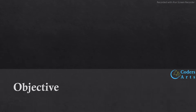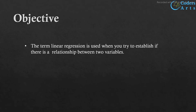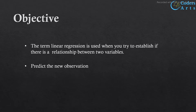The simple linear regression model has two main objectives. The first one is to establish the relationship between two variables — the dependent variable and the independent variable. We will see later what dependent and independent variables are. The second objective is to predict new observations based on historical data.